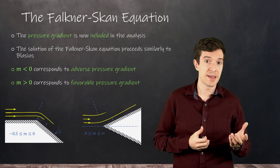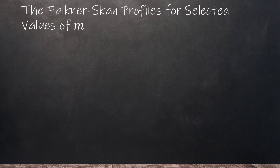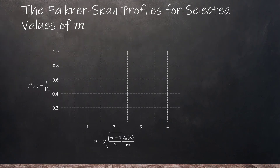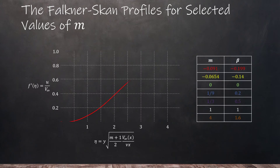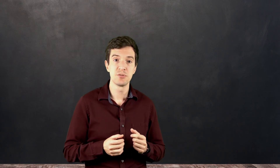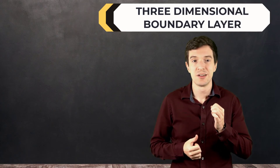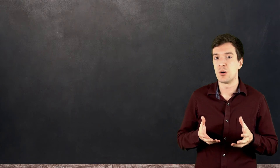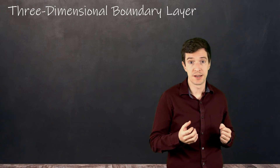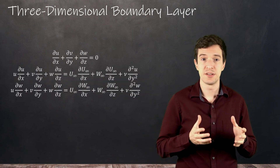Different combinations of beta and m can represent different configurations such as expansion corners and wedges. We can see the predicted velocity profiles for different combinations of m and beta: the profile shape can vary significantly, and for the red profile we reach flow separation. The Falkner-Skan equation gives us a good prediction accounting for pressure gradients and is valid up to the separation point for different geometries. The boundary layer equations seen so far deal with two-dimensional flows, but we can also extend our analysis to three-dimensional boundary layers.